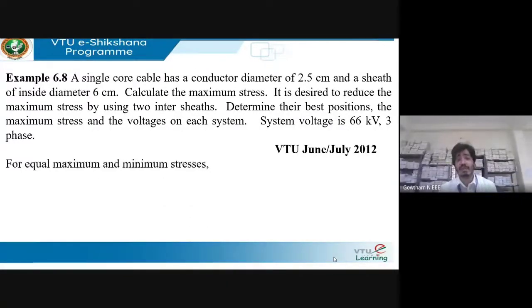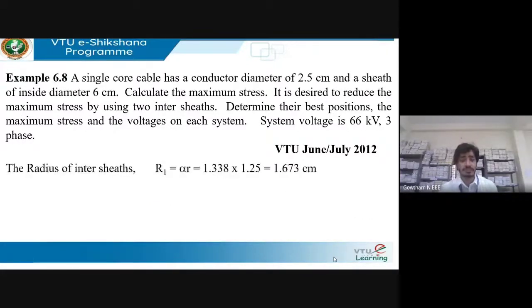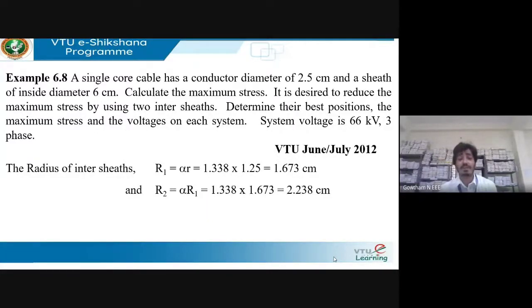For equal maximum stresses in all sections, set r1/r = r2/r1 = r3/r2 = α. Solving, α = 1.338. Radius of first inter-sheet: R1 = α × r = 1.338 × 1.25 = 1.673 cm. Radius of second inter-sheet: R2 = α × R1 = 2.238 cm.